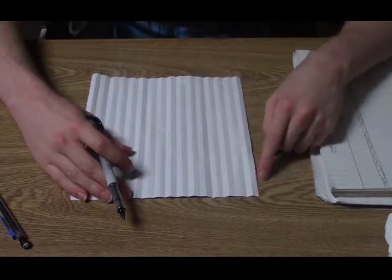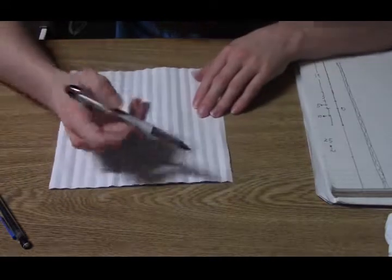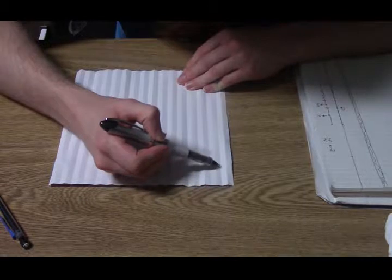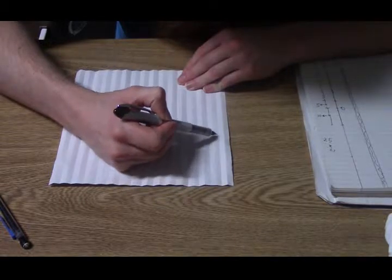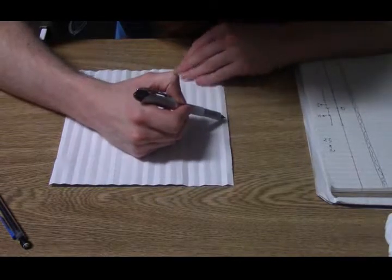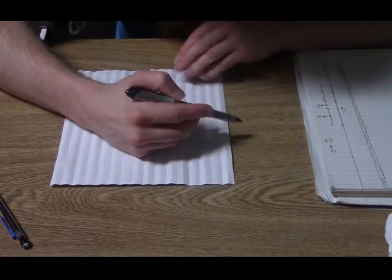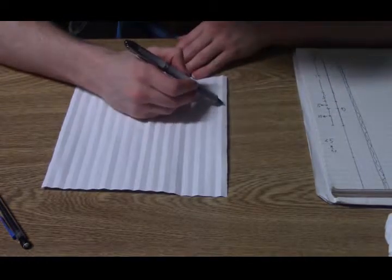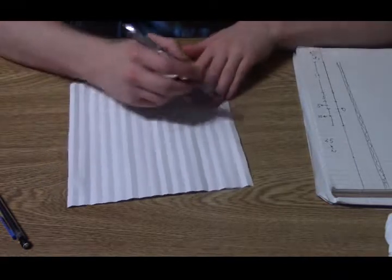you're going to count up 16 units. So it'll be half the square. 2, 4, 6, 8, 10, 12, 14, 16 units.